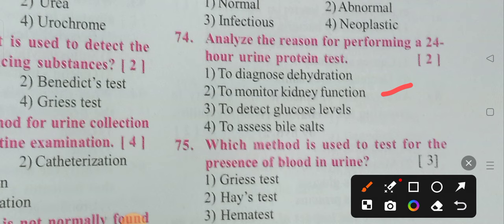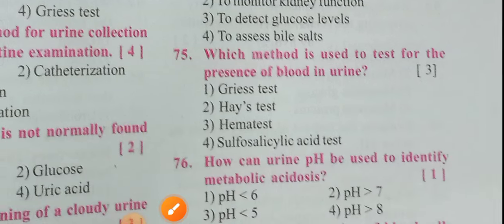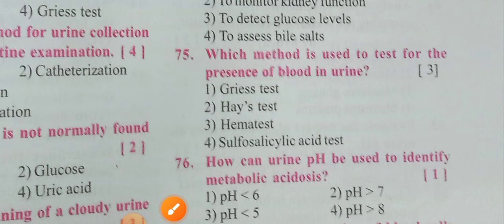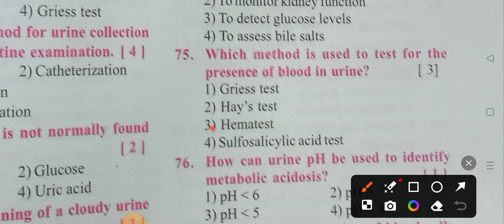Which method is used to test for the presence of blood in the urine? Options: Grease test, Heme test, Sulfosalicylic acid test. Option 3 is the correct answer — Heme test.